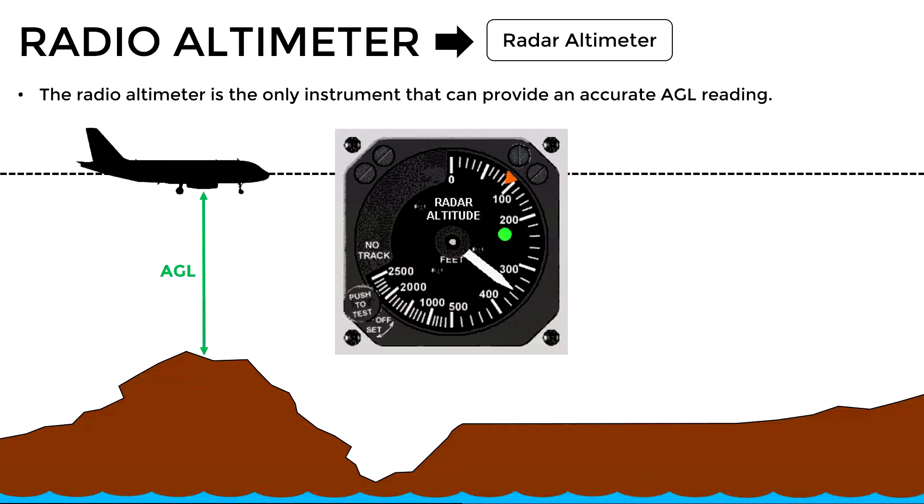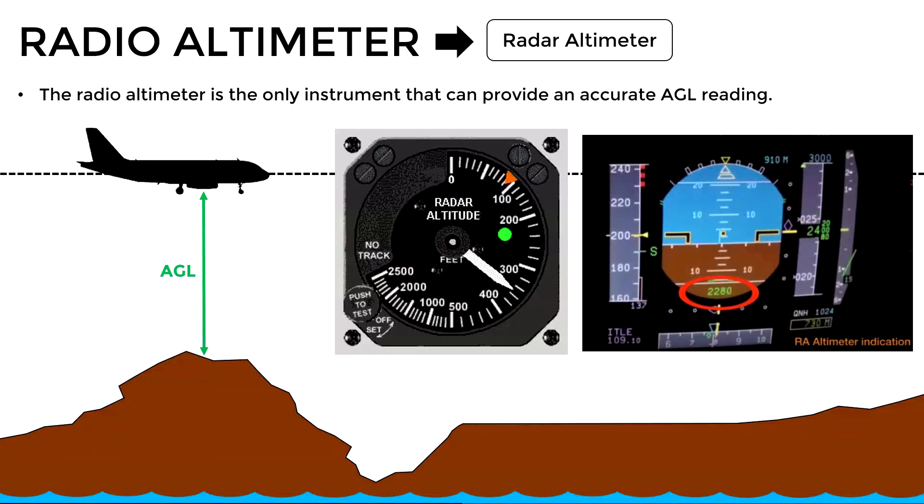The radio altimeter may be installed as an independent instrument or it can be embedded in the displays of the electronic flight instruments system. So having understood this concept, what happens if what we want is to measure the height of the aircraft in relation to the aerodrome level regardless of the terrain conditions below the aircraft?